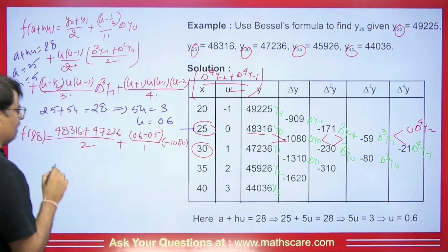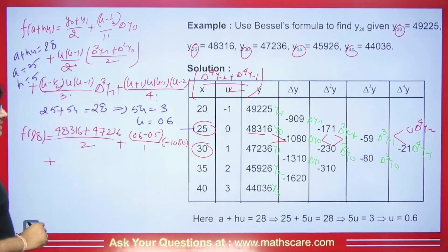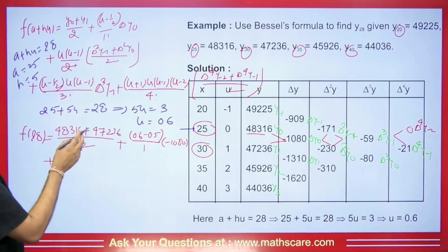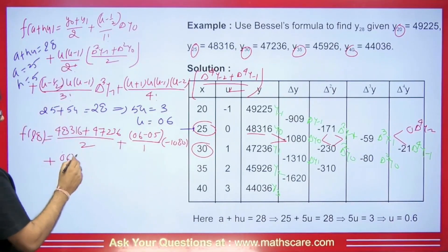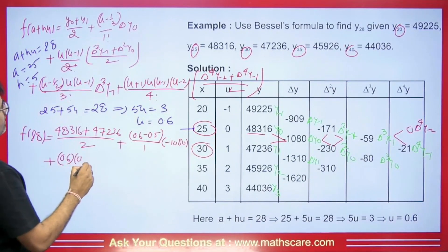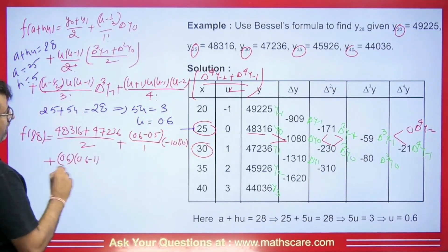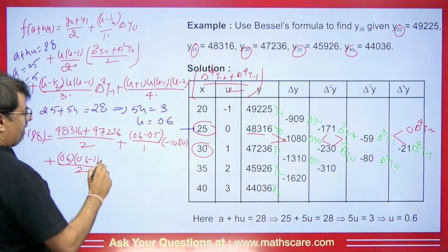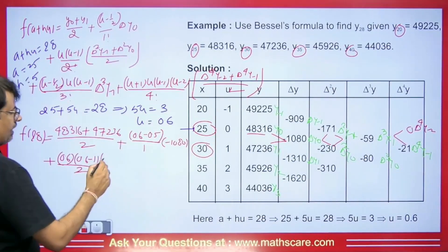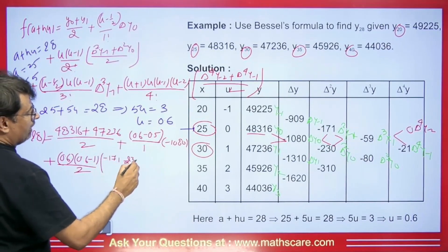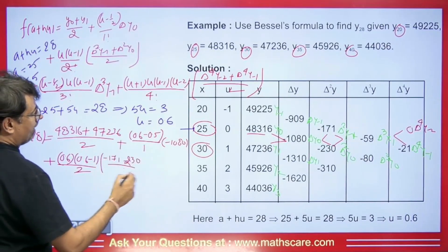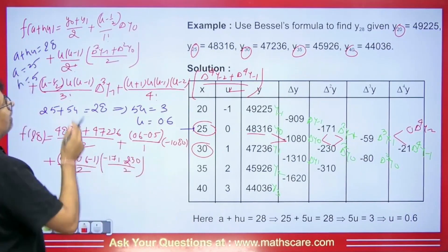Then plus, with U equals 0.6: 0.6 times (0.6 minus 1) divided by 2, times the average of del squared Y minus 1 and del squared Y0 — which comes to (minus 171 plus minus 230) divided by 2.